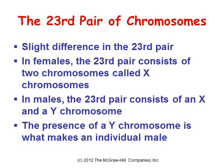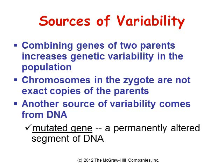The 23rd pair of chromosomes is slightly different. In females, the 23rd pair consists of two chromosomes called X chromosomes. In males, the 23rd pair consists of an X and a Y chromosome — the universal sign for female and male. The presence of a Y chromosome is what makes an individual male.